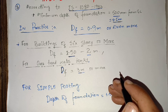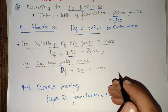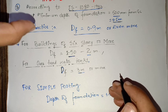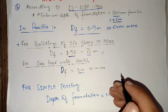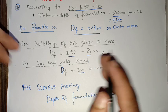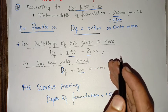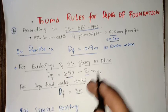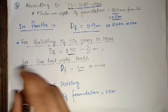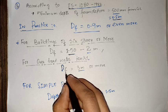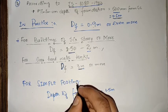In practice, these thumb rules give approximate values that come out from calculations. For overhead water tanks, the depth of foundation must be about 3 meters.